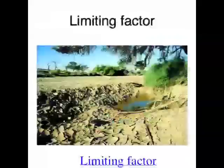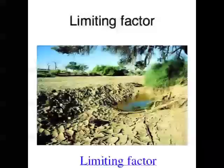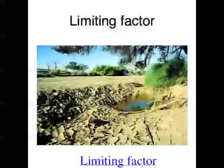Different organisms obviously require different things to survive. And if one thing an organism requires to survive is found in a limited supply in a particular environment, then that thing is called a limiting factor to the organism's survival. This will affect the distribution of where the organism lives.